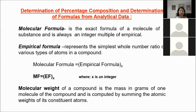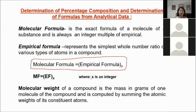Next, we determine percentage composition and formula from analytical data. Molecular formula is the exact formula of a molecule of a substance and is always an integer multiple of the empirical formula. Empirical formula represents the simplest whole number ratio of the various types of atoms in a compound. Molecular formula = (empirical formula) × x, where x is an integer. Molecular weight of a compound is the mass in grams of one molecule, computed by summing the atomic weights of its constituent atoms.